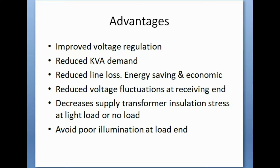This voltage fluctuation can be controlled and reduced by employing switching capacitor banks — that means controlling when to switch on the capacitor banks and how many units to switch on. It also decreases the power transformer insulation stress. At light load or no load condition during switching operations, there will be stress on the transformer insulation, reducing its life. After power factor correction, this fluctuation and insulation stress will be reduced. Additionally, this can avoid poor illumination at the load end — sometimes voltage dips occur in illumination systems, and after power factor correction this can be avoided.